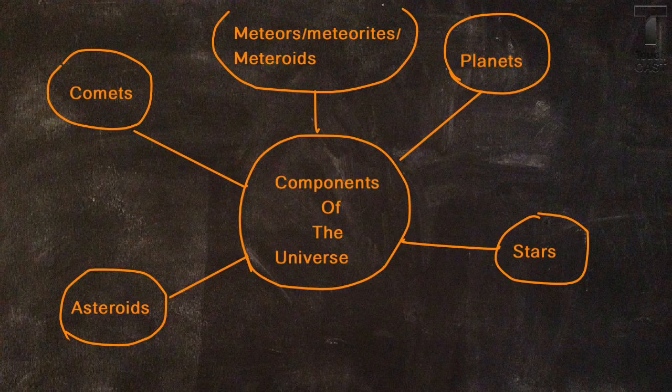We also have bodies or objects that are flying through our universe in the individual space or the vacuum that is outer space. We have something called meteors, meteorites, or meteoroids, and those are going to be found when they enter into Earth's atmosphere.